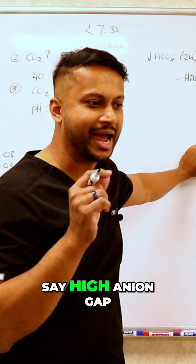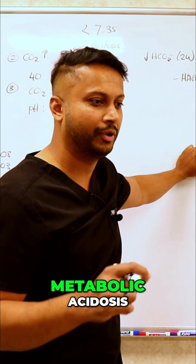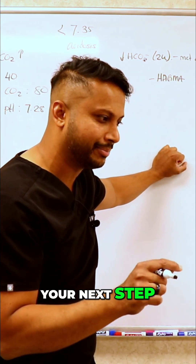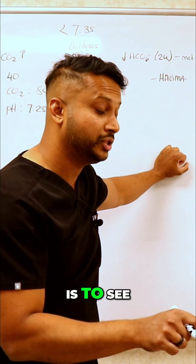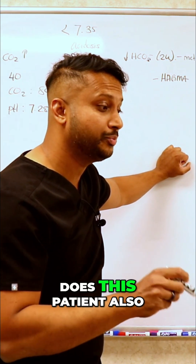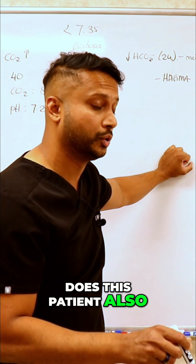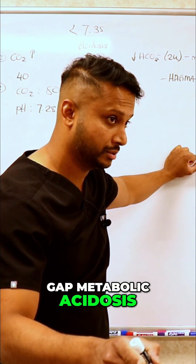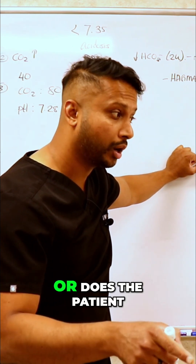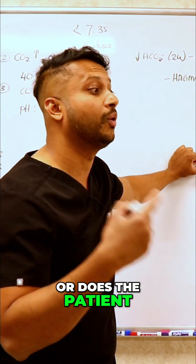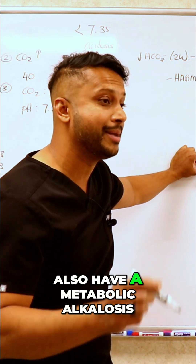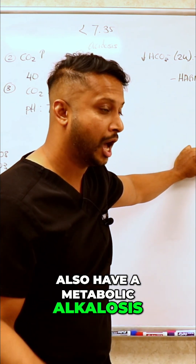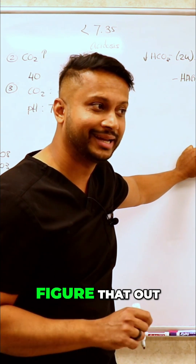So the moment you identify a high anion gap metabolic acidosis, your next step is to determine: does this patient also have a normal anion gap metabolic acidosis, or does the patient also have a metabolic alkalosis? How are you going to figure that out?